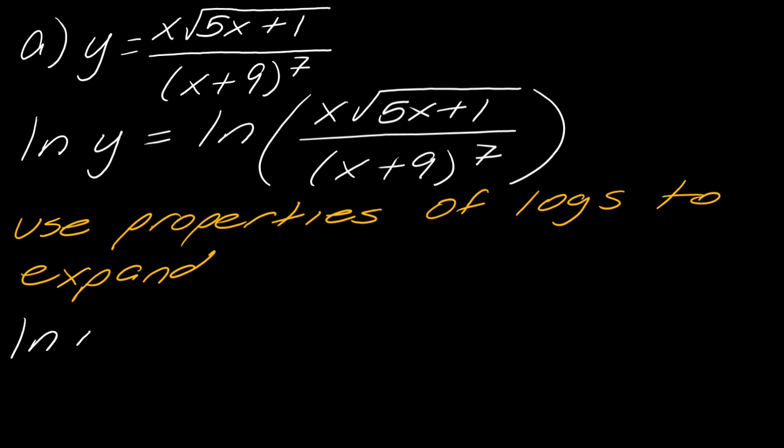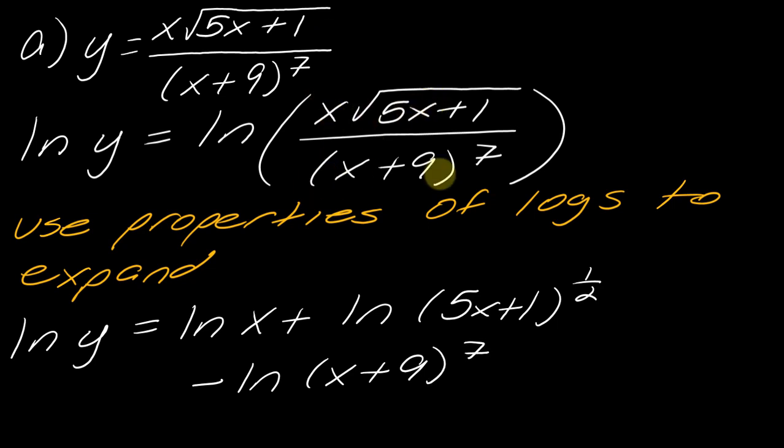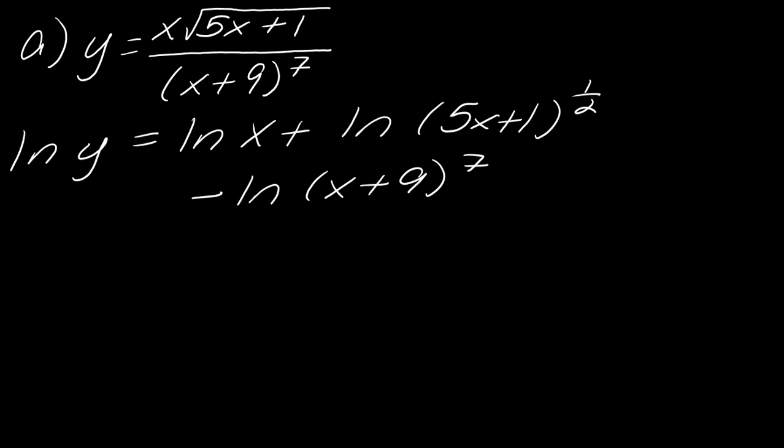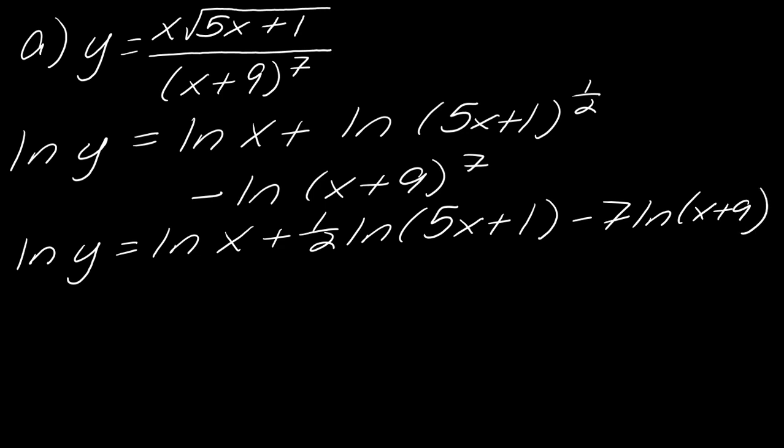Okay, so now I've got the natural log of y equals, okay, so lots of stuff going on here. First things first, so anything that's being multiplied on the top will get a plus sign. So I can break this up as the natural log of x plus the natural log of 5x plus 1 to the 1 half. So stuff that's in the numerator will usually get a plus sign. Anything that's in the denominator will get a minus sign. So then this becomes minus the natural log of x plus 9 to the 7th. So stuff on top plus, stuff in the bottom minus sign. You can always count on that. And then these exponents, I can bring them out in front. So let me clear some space. And so let's just write this one more time. So now I've got the natural log of y equals the natural log of x plus 1 half times the natural log of 5x plus 1 minus 7 times the natural log of x plus 9. And I even managed to squeeze that all in on the same line.